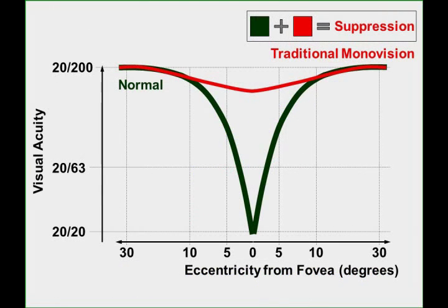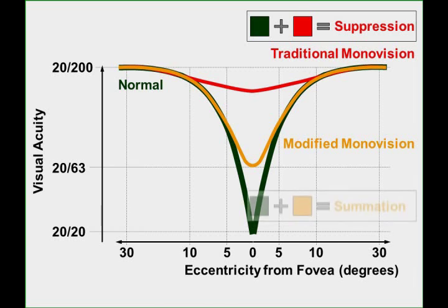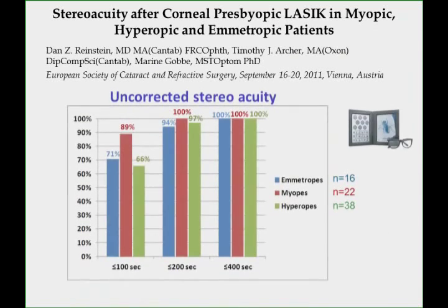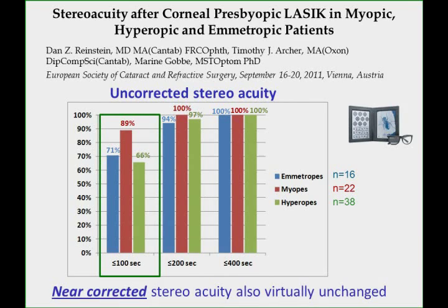In contrast, the visual acuity of the near eye in modified mono-vision is between 20/50 and 20/80, which means that the degree of image disparity is low enough for fusion to occur and therefore provides binocular vision requiring minimal central suppression. This is demonstrated by the fact that uncorrected functional stereo acuity is maintained at near.